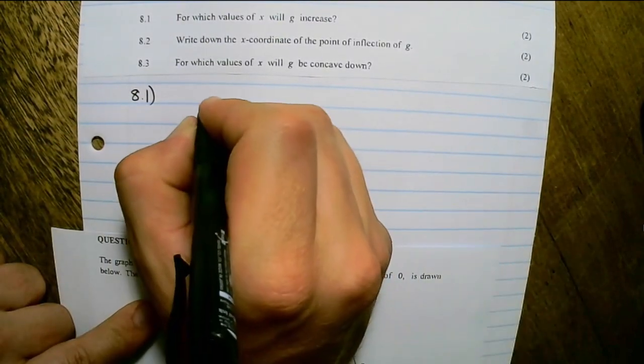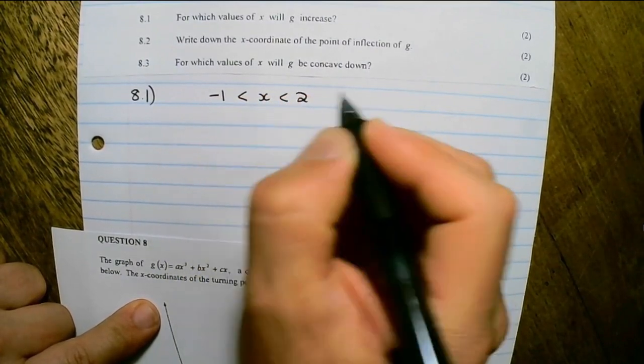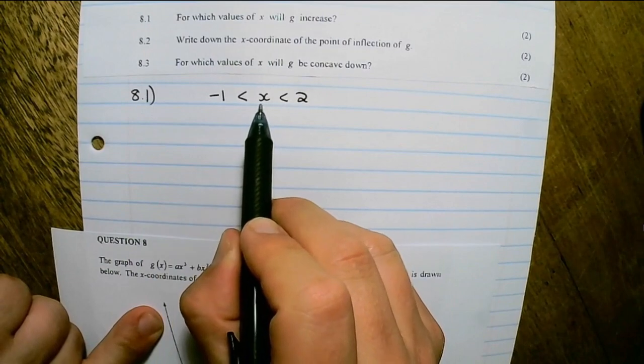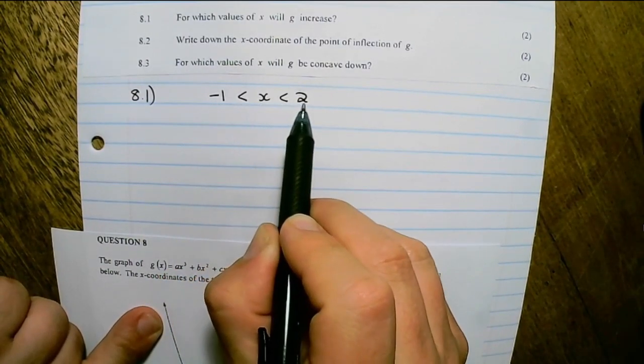So for 8.1, we can see that x is bigger than negative 1 or x is smaller than 2.